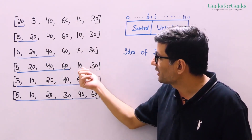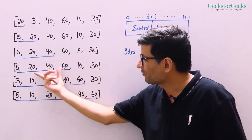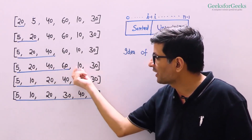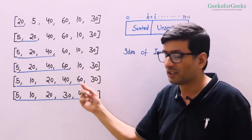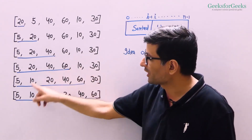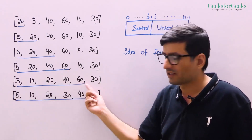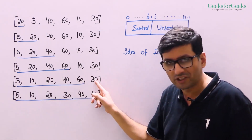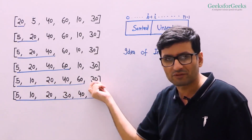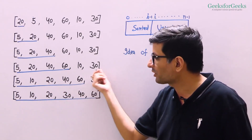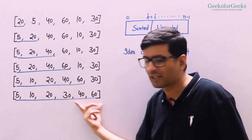Now when we come to the next element 10, the part from 5 to 60 is already sorted. We want to insert 10 at its correct position in this sub-array. So 10 goes after 5 and the sorted part grows. Then we come to 30, and after placing 30 at its correct position, the whole array becomes sorted.